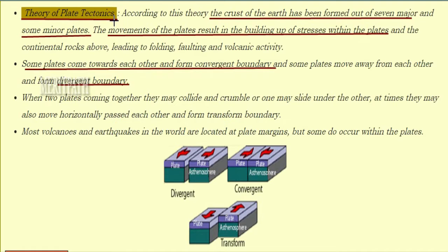Plate tectonics. According to this theory, the crust of the earth has been formed out of seven major and some minor plates. The movement of these plates results in building up of stresses within the plates and continental rocks above them. Some plates come towards each other forming a convergent boundary, while some move away forming a divergent boundary. When two plates come together, they may collide and crumble, or one may slide under the other.